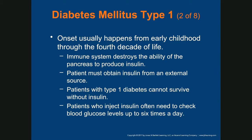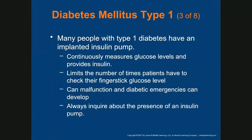Patients with type 1 diabetes cannot survive without insulin. There are different types: fast-acting, intermediate, and long-acting insulin. Patients who inject insulin often need to check their blood glucose level daily. Many people with type 1 diabetes have an implanted insulin pump, which continuously measures glucose levels and provides insulin. It can malfunction, leading to a diabetic emergency, so always inquire about the presence of an insulin pump.